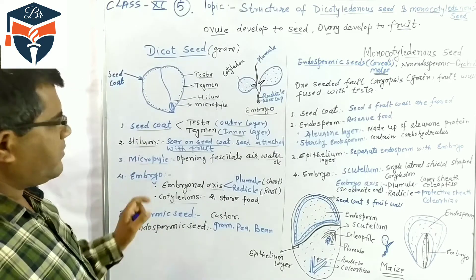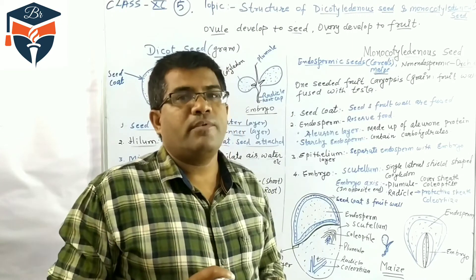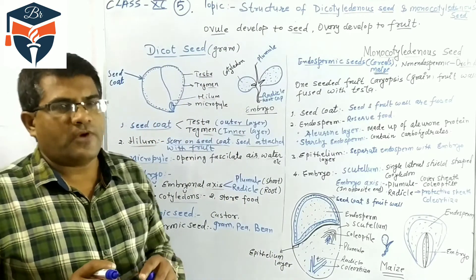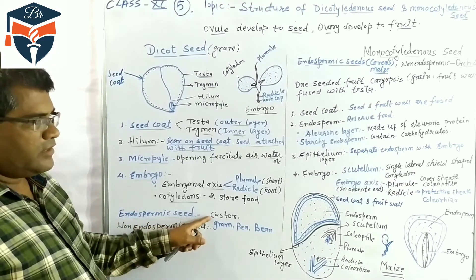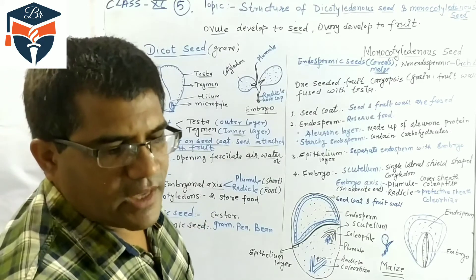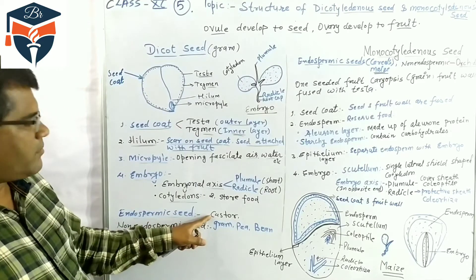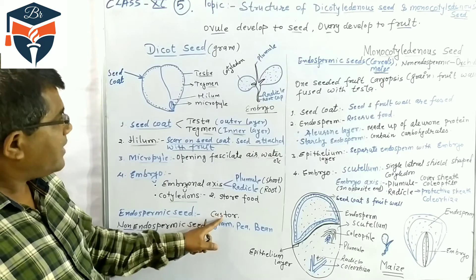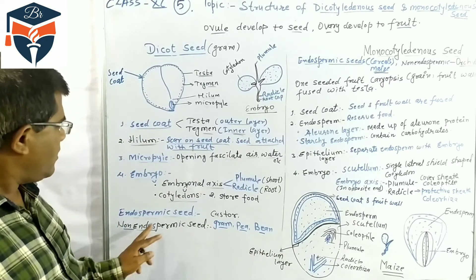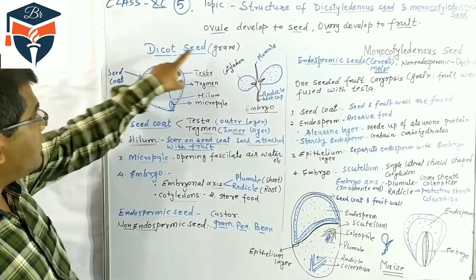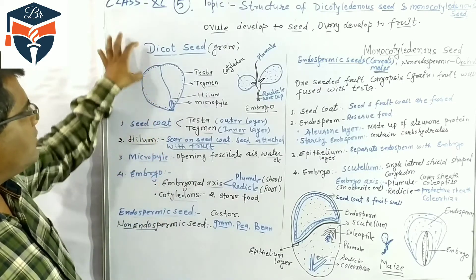In dicot seeds, two types of seeds are observed. One is the endospermic seed — endosperm is a structure formed during double fertilization. When endosperm is present in the seed, it is called an endospermic seed. Some seeds do not have endosperm; these are called non-endospermic seeds. Castor is an example of a dicot endospermic seed, whereas gram, pea, and bean are non-endospermic seeds. That is why endosperm is not mentioned in the gram seed description.